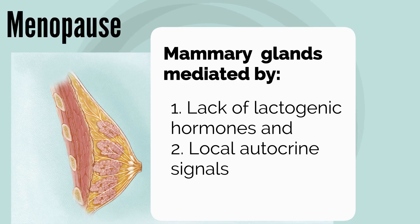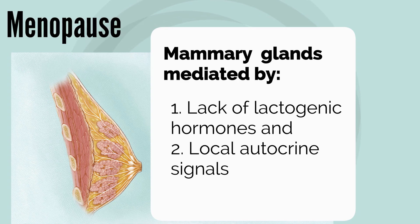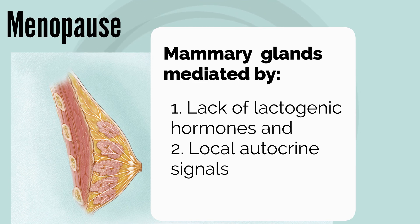It is important to note that there are many changes that continue to happen to the breast after lactation. The mammary glands will involute due to apoptotic cell death mediated by the lack of lactogenic hormones and local autocrine signals. In menopause, there is further atrophy of the glandular elements and loss of the lobules. Adipose tissue also displaces the fibrous connective tissue of the breast.